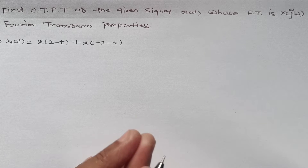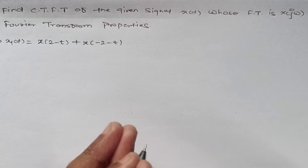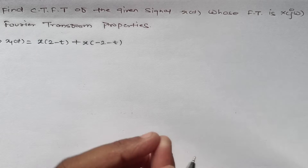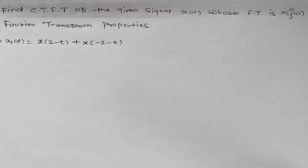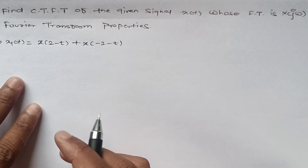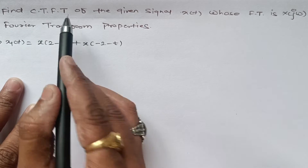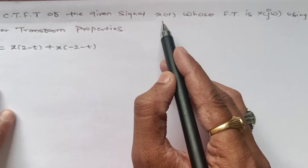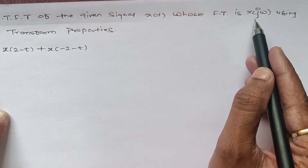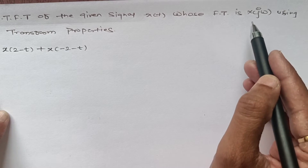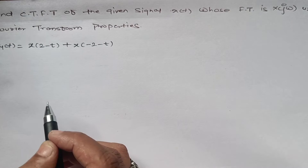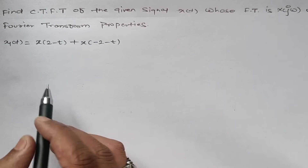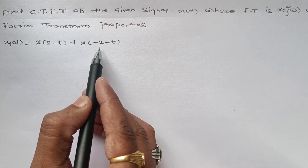Hello everyone, welcome. In this video we will see examples on continuous time Fourier transform. This question was asked in the university examination, and these questions are also presented in P. Ramesh Babu's book on signals and systems. The question is: find the continuous time Fourier transform of x1(t) = x(2 - t) + x(-2 - t), given that the Fourier transform of x(t) is X(jω).